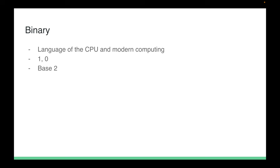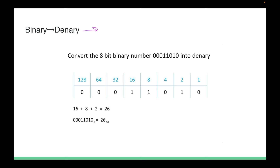Binary is the language of the CPU in modern computing. There are two possible values: one and zero. Binary is base two. To convert an eight-bit binary number like 00011010 to decimal: starting from the right, each position represents 2 to the power of 0, 2 to the power of 1, and so on up to 2 to the power of 7.